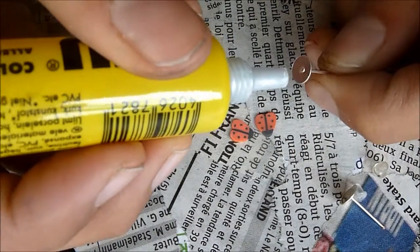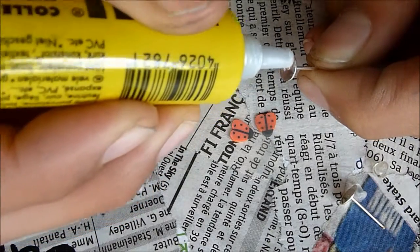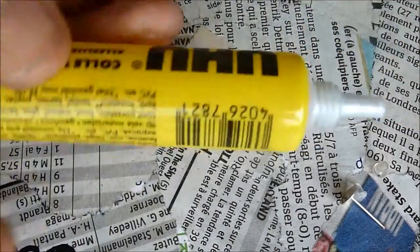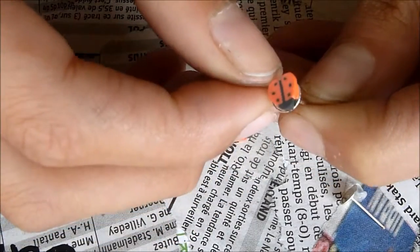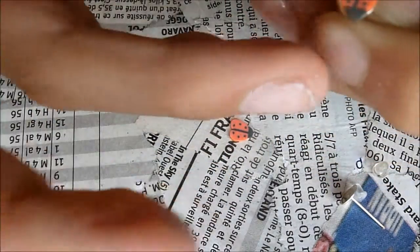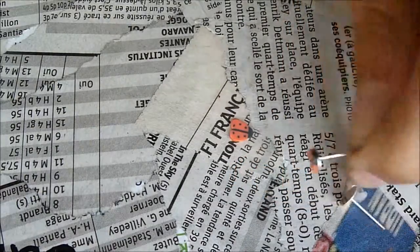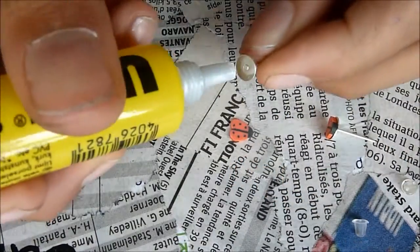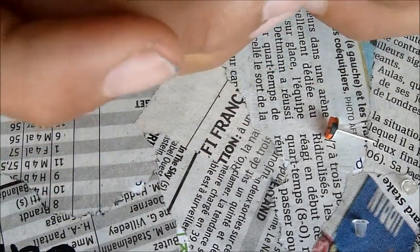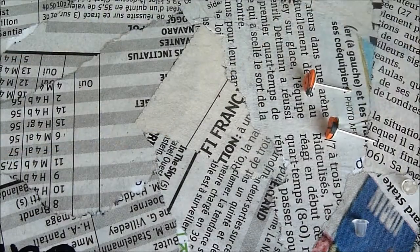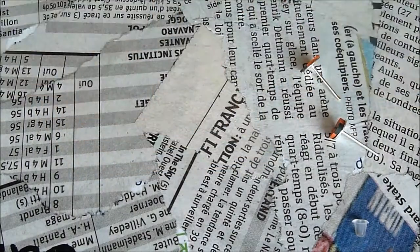Maintenant, vous allez prendre vos puces et mettre un tout petit peu de cette colle UHU. Et on va venir coller, mettre cette puce sur le plateau. Je viens faire pareil avec l'autre. Et dès que ça sera sec, vous pourrez mettre le petit capuchon ou le mettre sur votre présentoir.